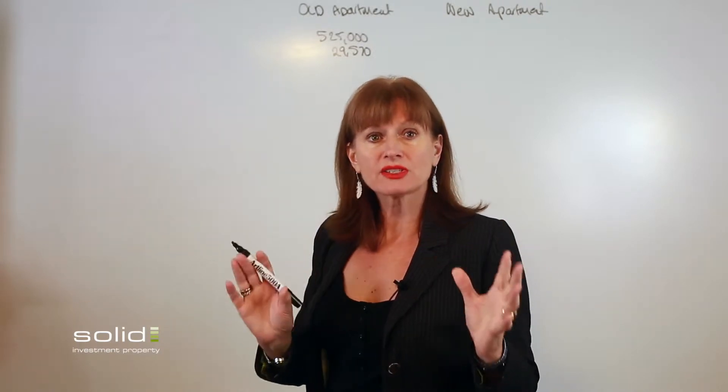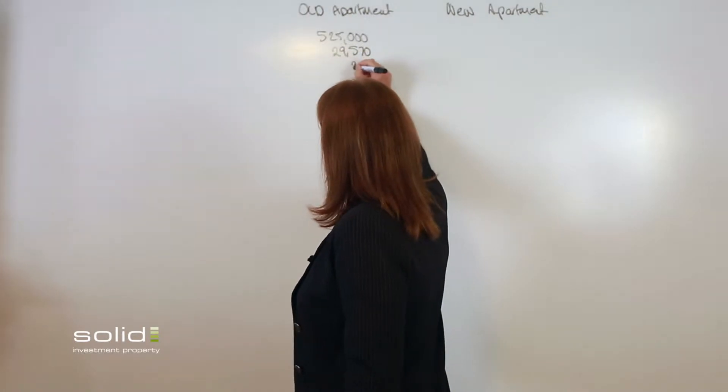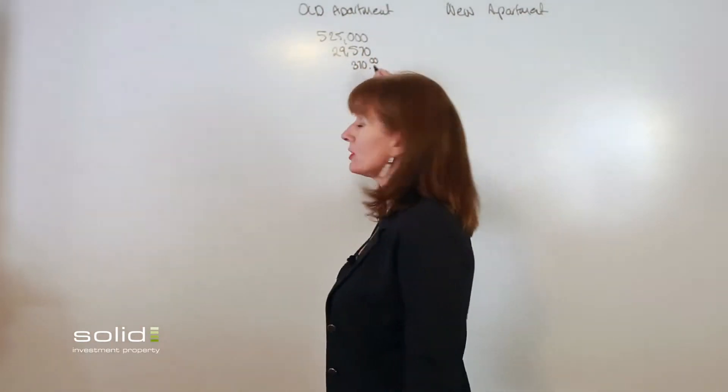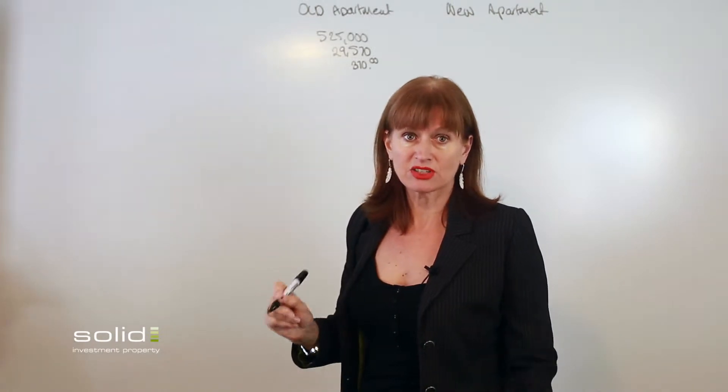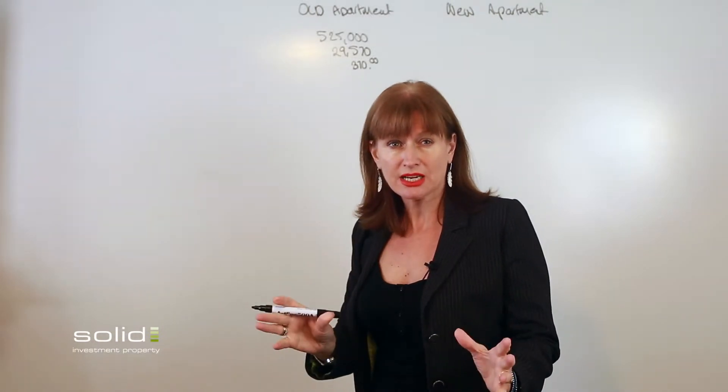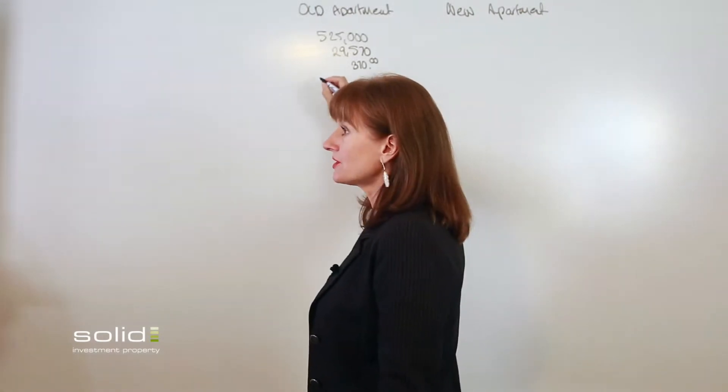So the borrowings are very similar. The interest rate is the same, but because it's an old apartment, I got my rental team to have a really good look at it and they benchmarked the rental at about $370. They said between $360 and $380, so I've gone for the middle point. The interest is the same.